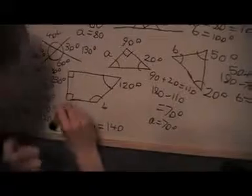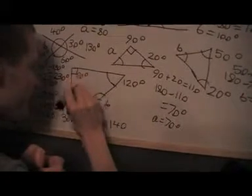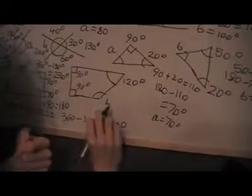Here I've got 90, 90, and 120. So I've got 90 plus 90 plus 120, which is 300. Subtracting from 360 gives angle B as 60 degrees.